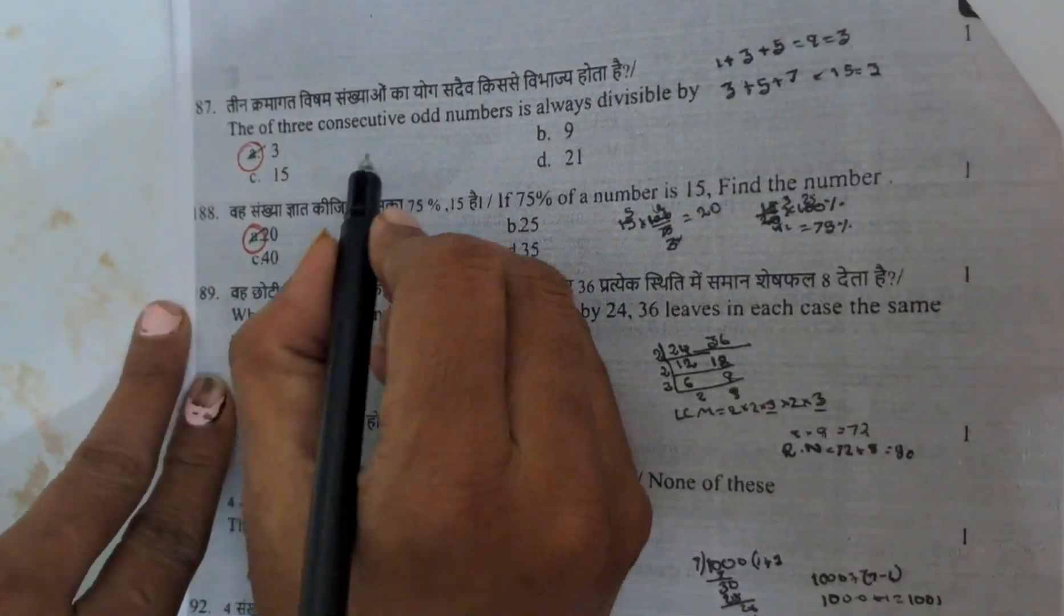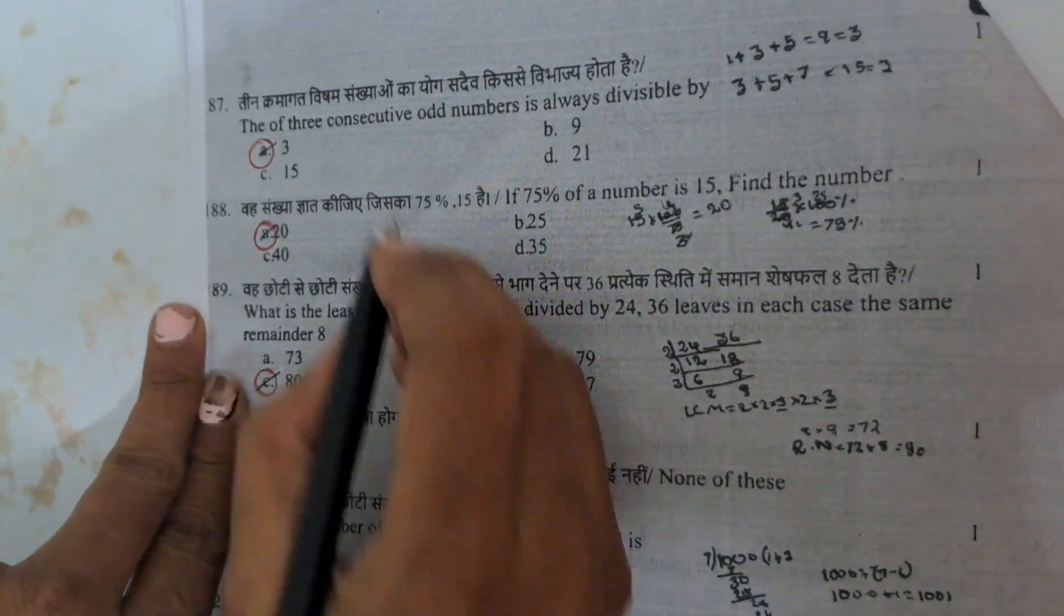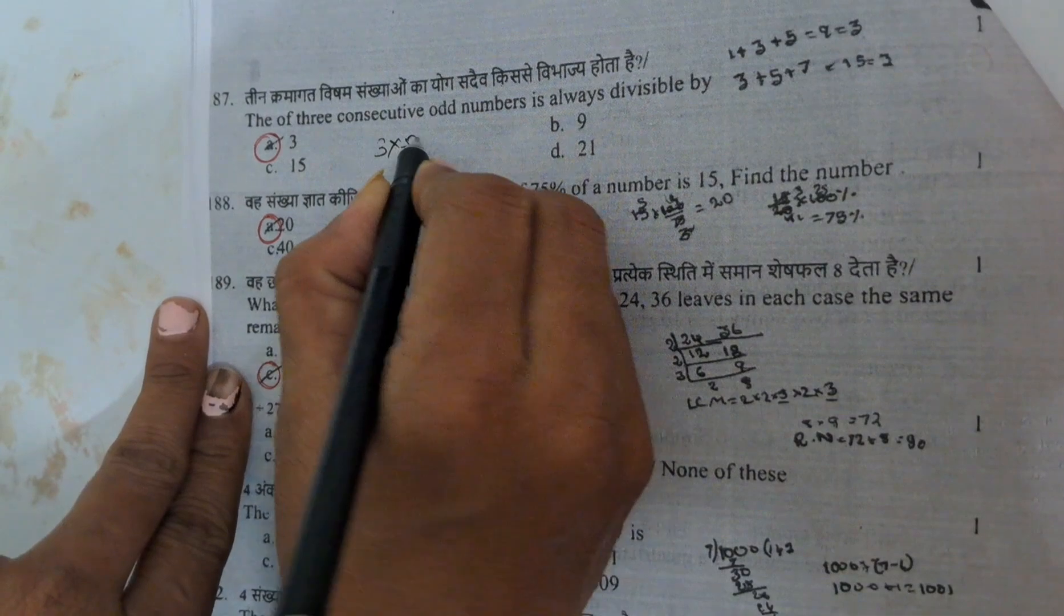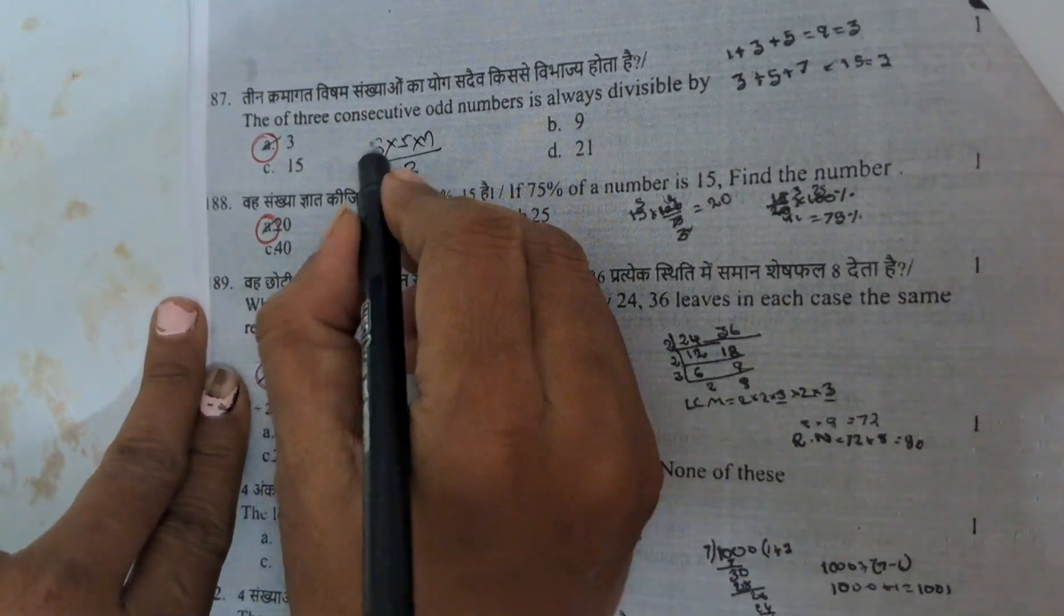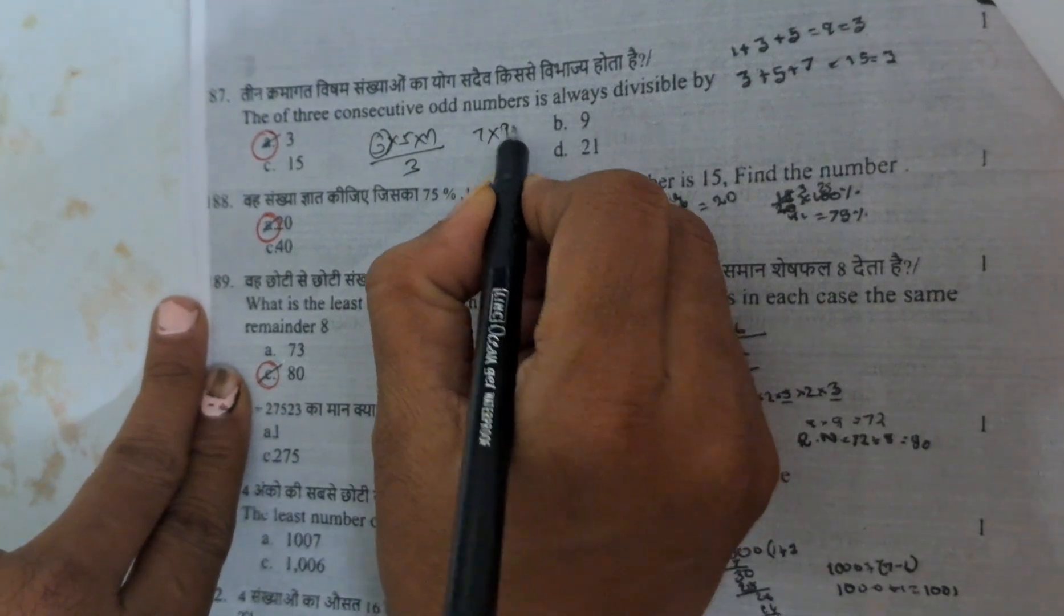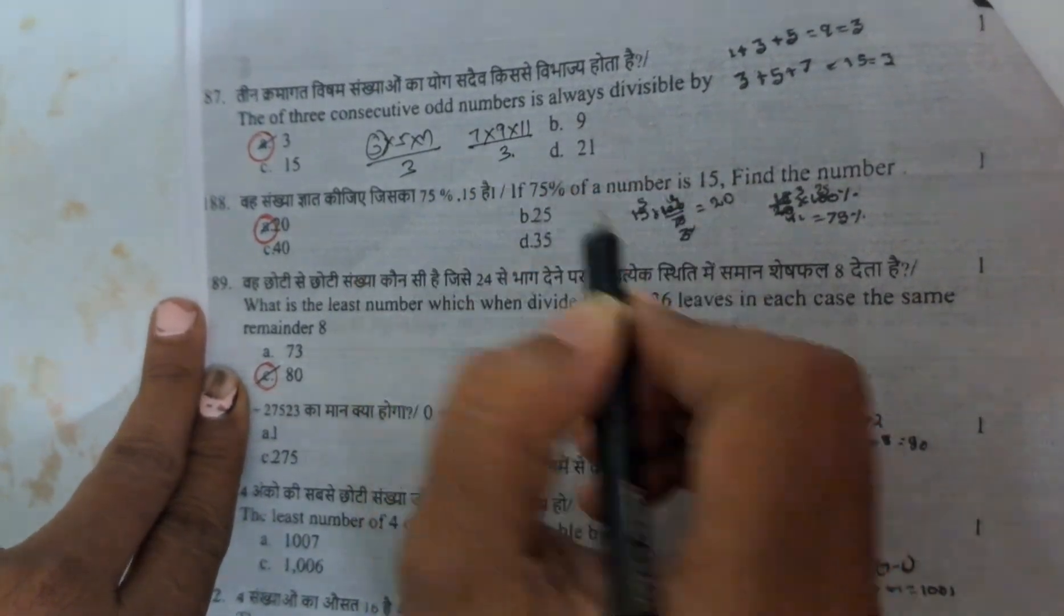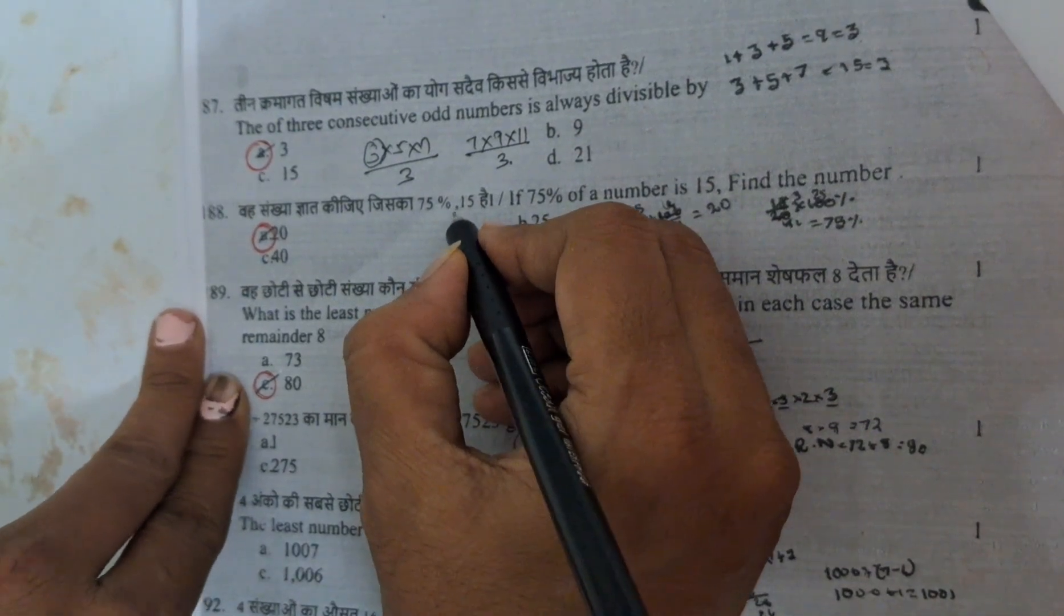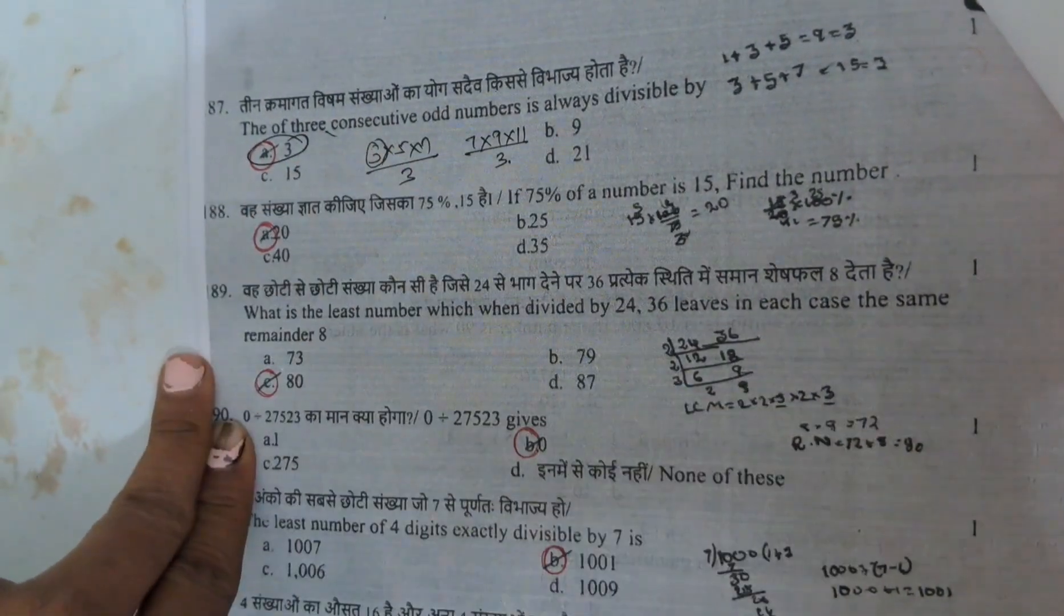The 3 consecutive odd numbers is always divisible by. 3 consecutive odd numbers, suppose I am taking for example 3, 5, 7. It is always divisible by 3 because it is 3. And suppose if you take 7, 9, 11, this is also always divisible by 3. Any 3 consecutive odd numbers, compulsory one will be divisible by 3. Answer is 3.